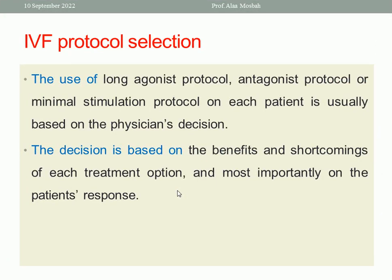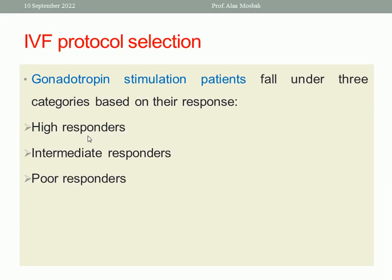Regarding IVF protocol selection, the choice of long agonist, antagonist, or minimal stimulation protocol is usually based on physician decision, considering the benefits and shortcomings of each treatment option and most importantly the patient's response. GnRH stimulation patients fall under three categories based on their response: high responders, intermediate responders, and poor responders.